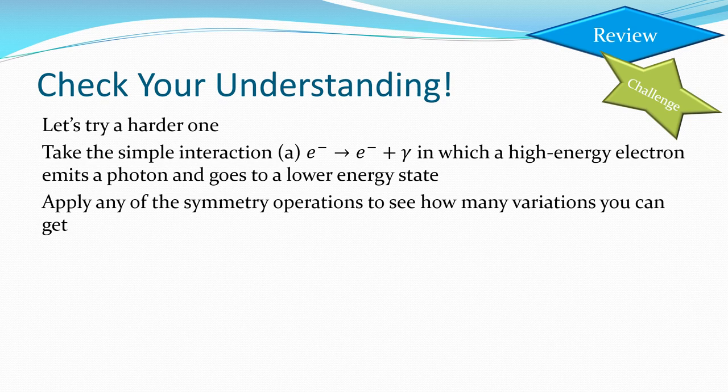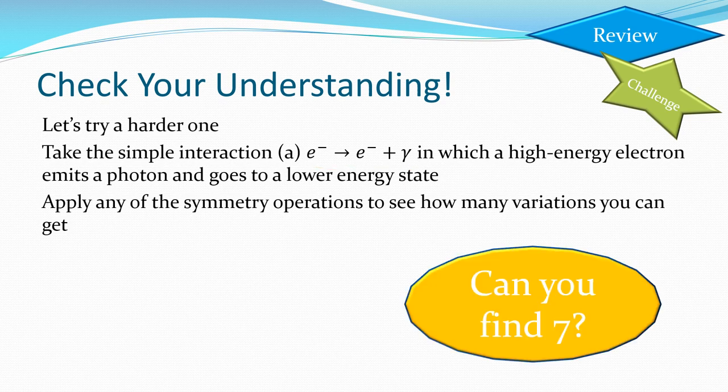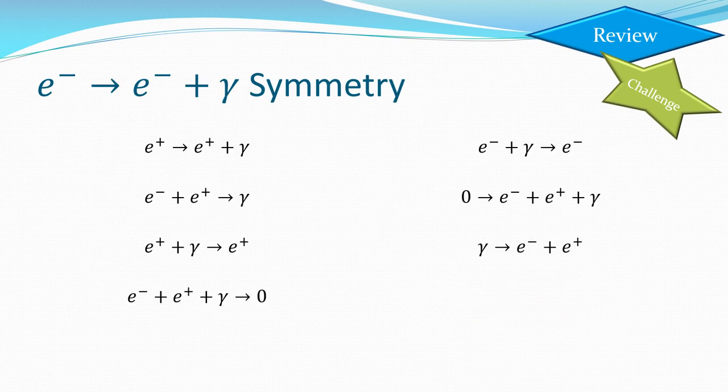Take this interaction here of this high energy electron emitting a photon going to a low energy state. Think of an electron going from a high energy level to a lower energy level. That's kind of how we're depicting that. It's releasing energy, releasing a photon. What symmetry operations can you think? Think of our crossing symmetry, our charge symmetry, all of those things. Can you come up with them? Pause the video and have a go at it. Can you find seven of them? And here they are here.